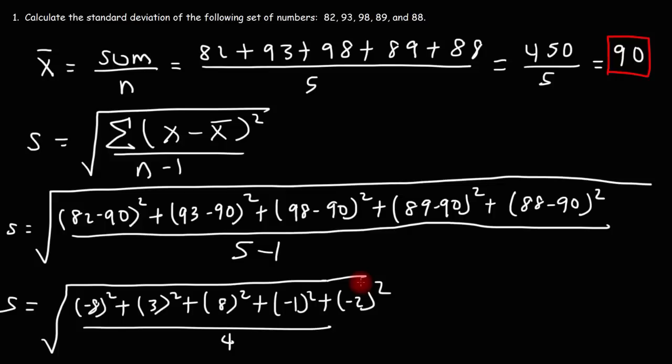So go ahead and type this in. We have 8 squared plus 3 squared plus 8 squared plus 1 squared plus 2 squared, and that adds up to 142. Divide that by 4, and then take the square root of that result. And so you should get a standard deviation of 5.958. So this is the answer.